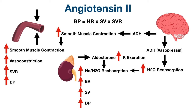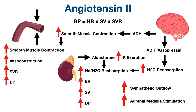You can see how all of the effects of angiotensin 2 tie together. Angiotensin 2 can also stimulate sympathetic outflow and the adrenal medulla to secrete epinephrine and norepinephrine — the main catecholamines of the sympathetic nervous system — further amplifying the blood pressure-raising effects. Remember, the sympathetic nervous system can also activate the RAAS by stimulating renin release, creating a reinforcing loop.